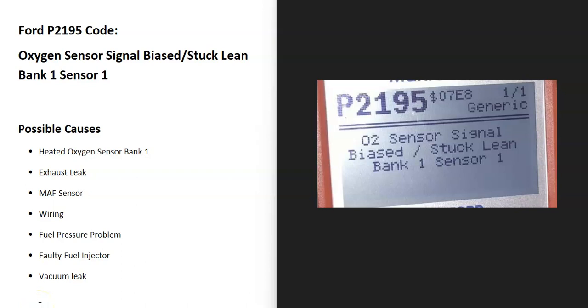Today I'm talking about a Ford with the P2195 code, what it is and how you go about fixing it. So what is a Ford P2195 code? It's an oxygen sensor signal biased stuck lean bank one sensor one.